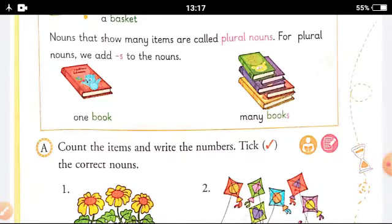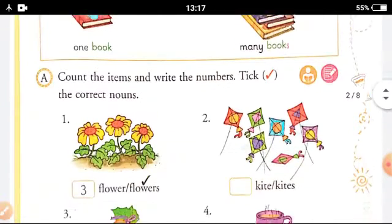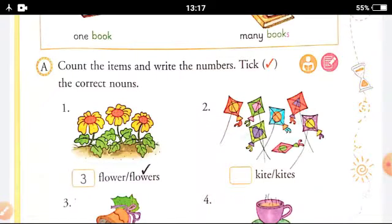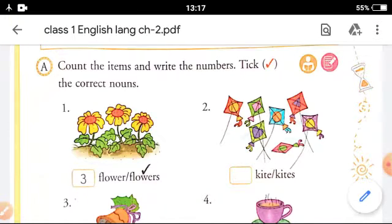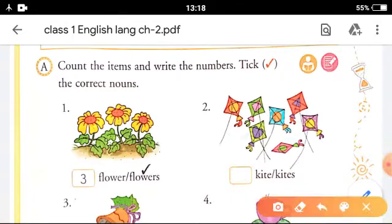Now count the items and write the numbers. Tick the correct nouns. See in the first picture, when you count, how many flowers are there? There are three, so three is more than one, so you will tick flowers. Now see the kites. Is it one kite? No, there are many kites. Count: one, two, three, four, five, six, seven. Seven kites are there, so you will write seven here and tick mark on the kites.